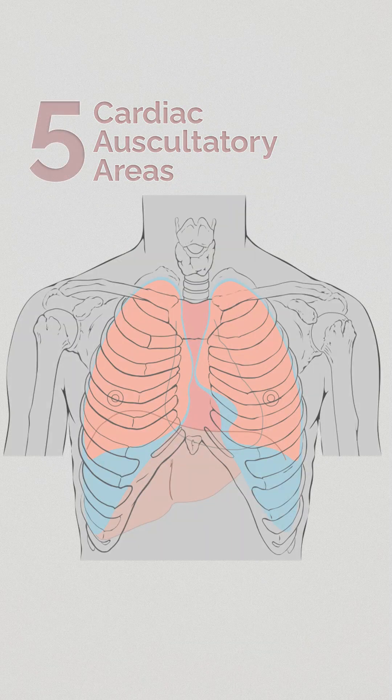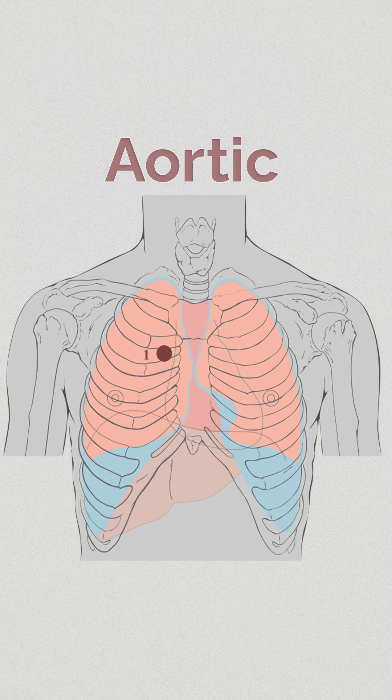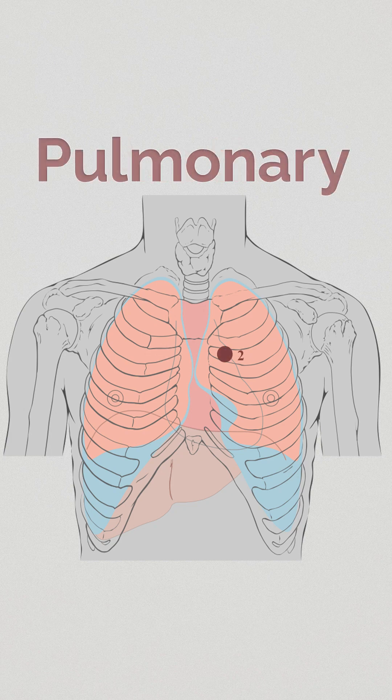There are five primary auscultation sites for cardiac examination. The aortic area is located in the second right intercostal space. The pulmonary area is situated in the second left intercostal space.